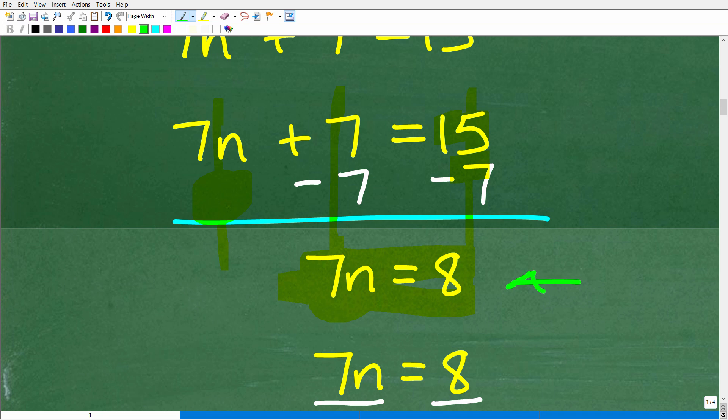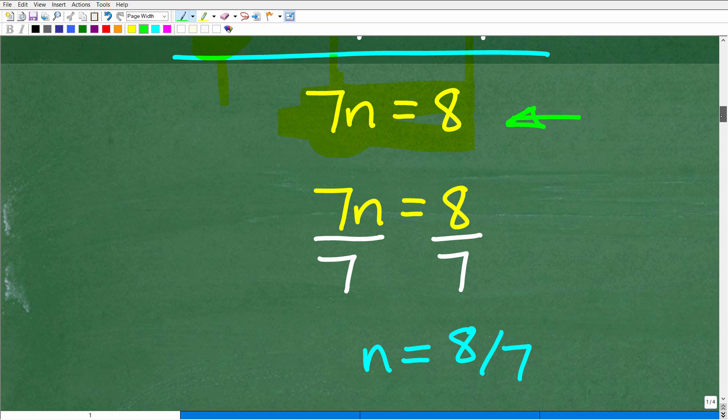Okay, so now we're down to this lovely one-step equation. And to solve for n, all we need to do is divide both sides of the equation by 7, and we get n is equal to 8 sevenths.